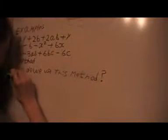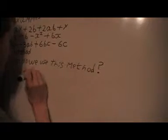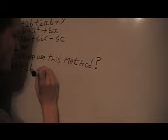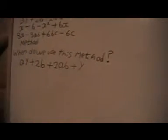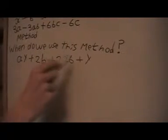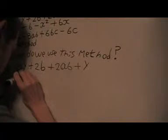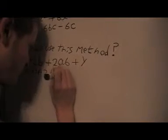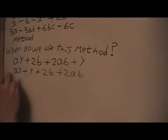Let's have a look at the first example. We've got ay + 2b + 2ab + y. What I'm going to do is rearrange this a bit so I've got ay + y + 2b + 2ab.